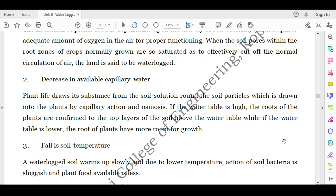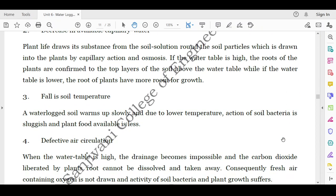Sometimes it is better to have the water table at a lower level so that the plants will have ample room for their roots to grow and to extract the capillary water and nutrients desired. Third is the fall in the soil temperature. A waterlogged soil warms up slowly and due to lower temperature, the action of soil bacteria is sluggish and plant food available is less.